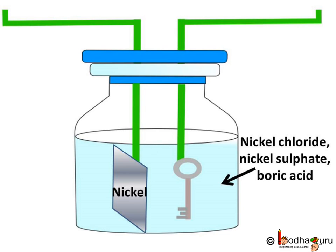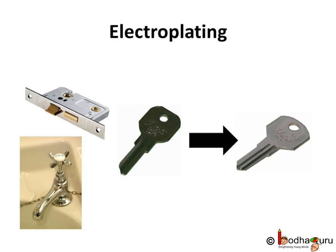You know, to get a nickel plating on the key, we can use a piece of nickel instead of a piece of copper at the positive terminal, and we use a compound having nickel as the electrolyte — for example, nickel chloride, nickel sulphate, etc. This process of depositing a layer of any desired metal on another material by means of electricity is called electroplating.